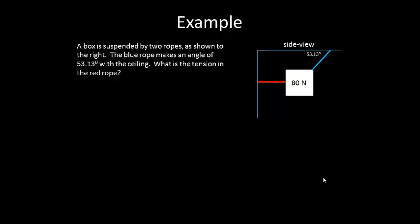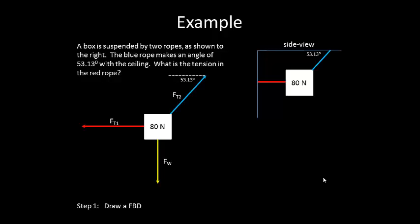So here's our example. We have an 80 newton box that is suspended by two ropes as shown. What is the tension in the red rope? So again, our step one, draw the free body diagram.